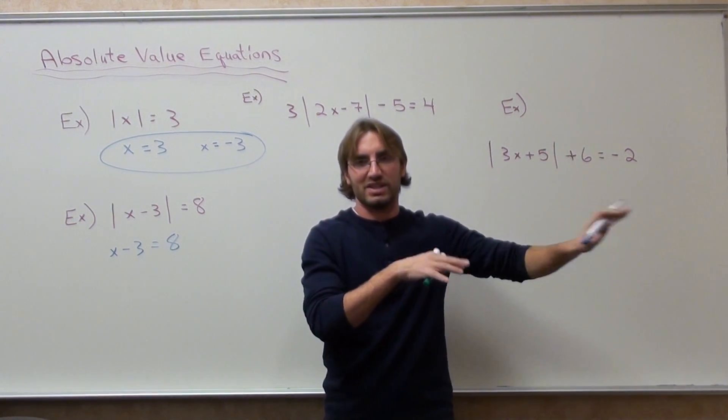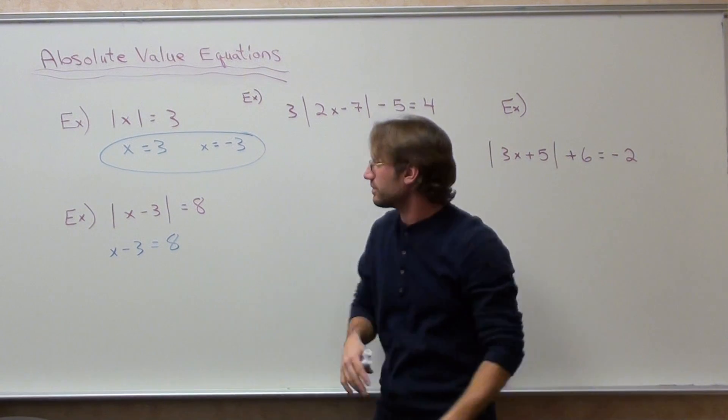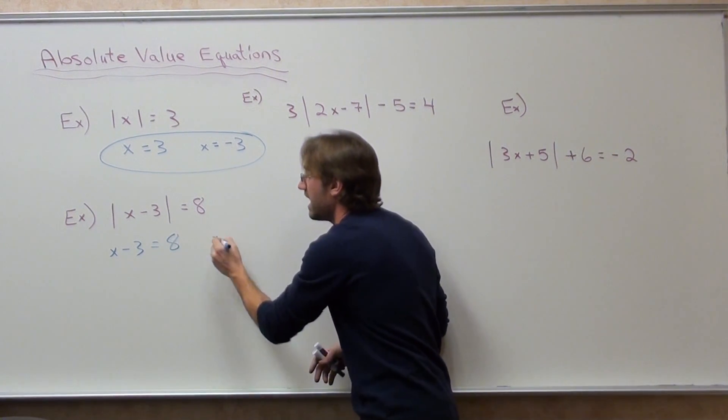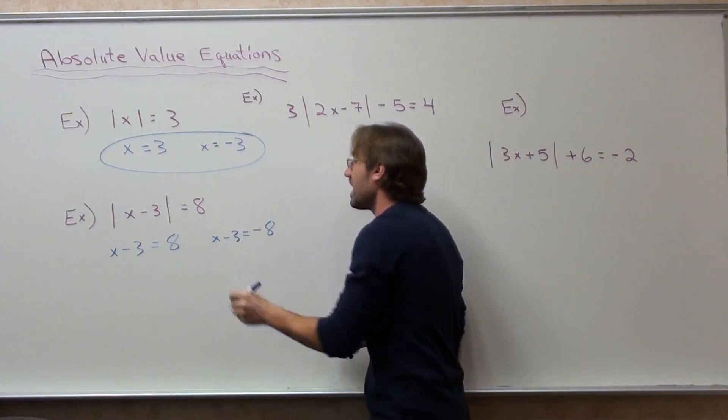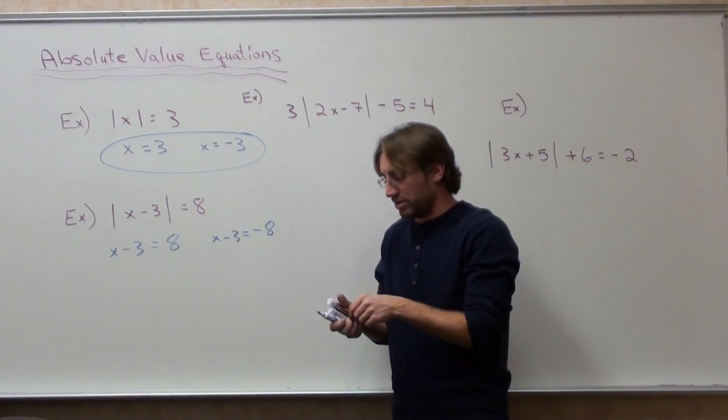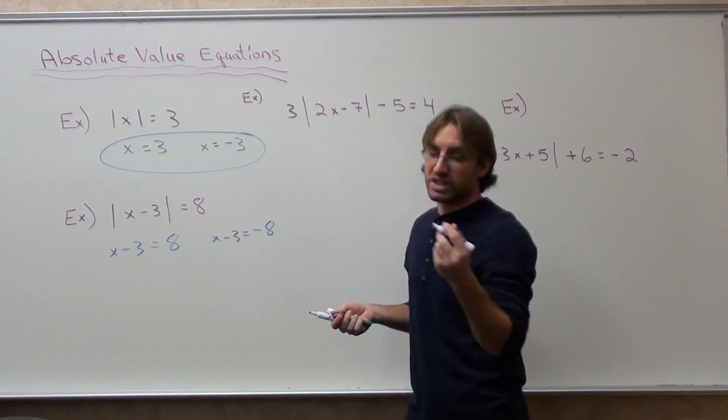So x minus three equals eight and x minus three equals negative eight. That's how we solve an absolute value. That's all. That's all we do. Now we're going to add three to both sides.